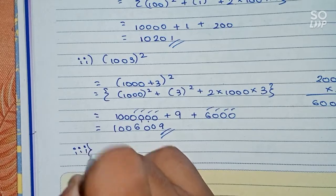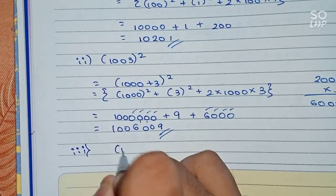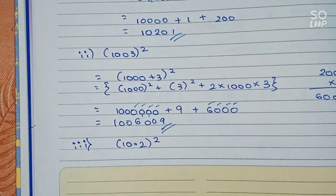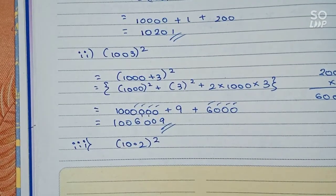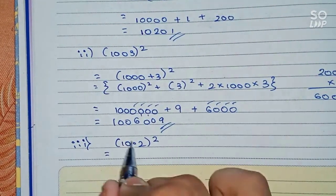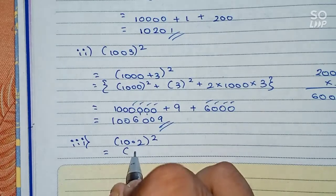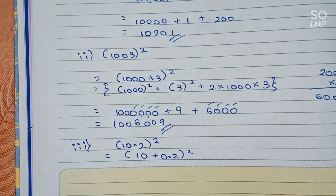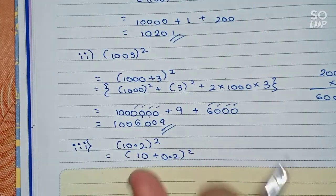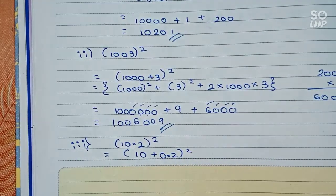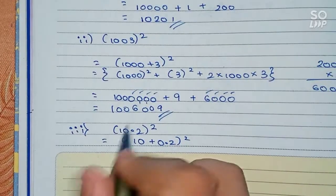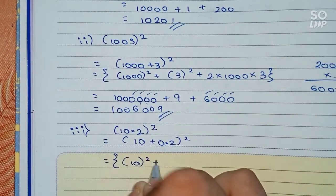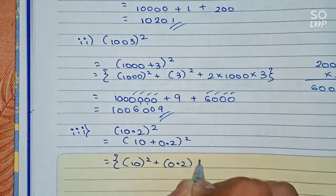Now the last question says 10.2 whole square. This is a different type involving decimals, but it works the same way. We write 10.2 as 10 + 0.2 whole square, and apply the (a + b)² formula: 10² + 0.2² + 2 × 10 × 0.2.